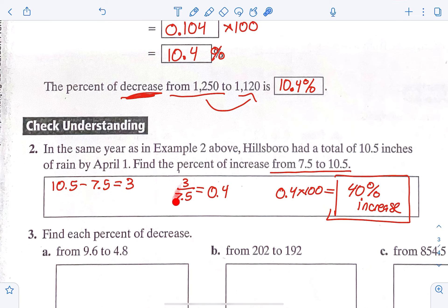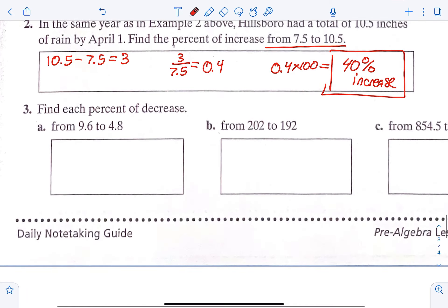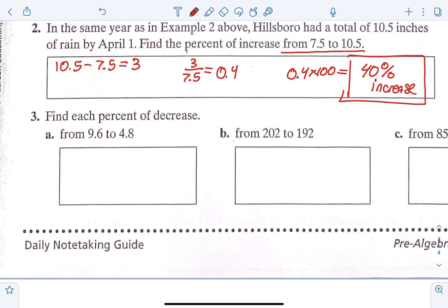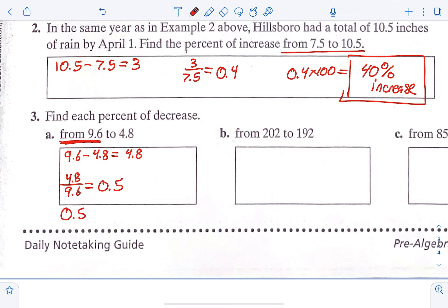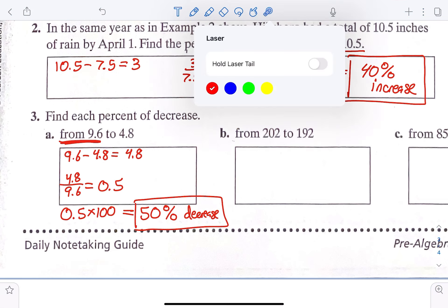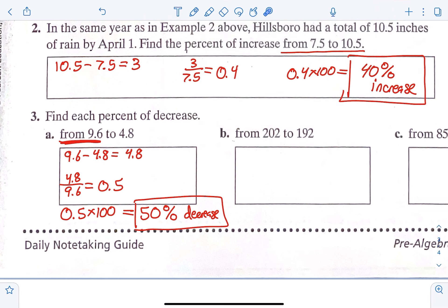Step one: subtract. Step two: fraction, then divide. Step three: turn it into a percent by timesing it by 100. Find the percent of decrease from 9.6 to 4.8. Step one: 9.6 minus 4.8 gives 4.8. Then we put 4.8 over our original amount — it said 'from 9.6,' so it goes over 9.6. When we do that division, we get 0.5. 0.5 times 100 gives 50%. This is a decrease because we went from 9.6 to 4.8, so it's getting smaller.